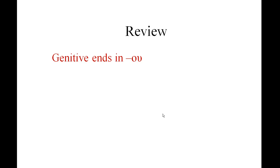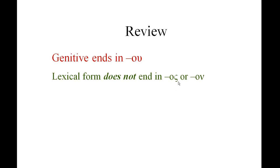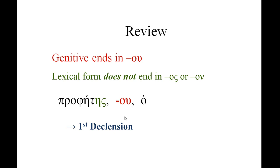Finally, if our genitive ends in omicron-upsilon and the lexical form does not end in omicron-sigma or omicron-nu, we look at the lexical form — if it has eta-sigma at the end, we can be pretty sure it is first declension. Notice in this case the genitive is omicron-upsilon. The definite article 'ho' tells us it's masculine, so there are a few masculine nouns that are first declension.